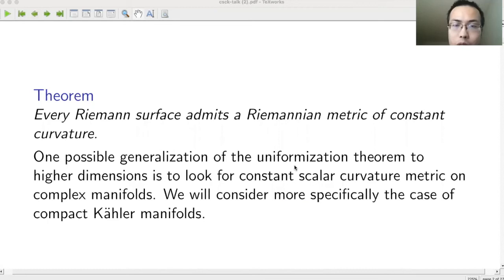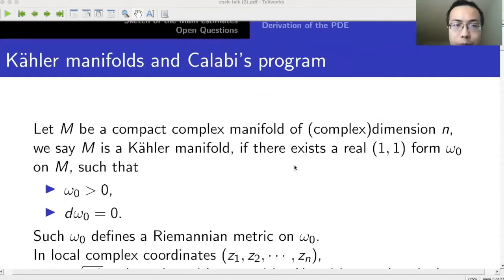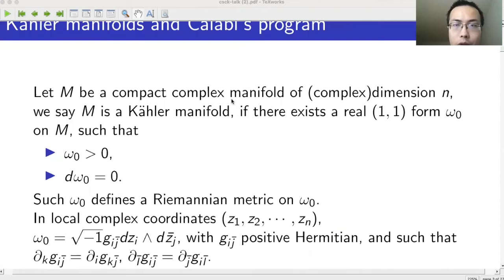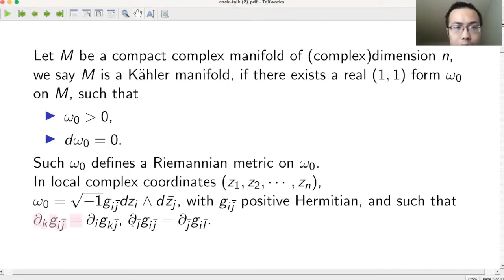We will consider more specifically the case of compact Kähler manifolds. A Kähler manifold is a compact complex manifold of dimension n such that there is a real (1,1)-form omega zero which is positive and closed. We know that omega zero defines a Riemannian metric, and in local coordinates you can write omega zero as g_{i\bar{j}} dz^i \wedge d\bar{z}^j, where g_{i\bar{j}} is pointwise positive Hermitian, and the form is closed.